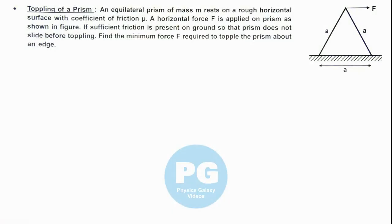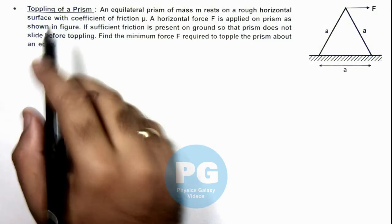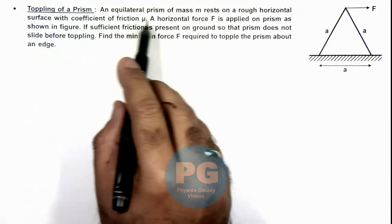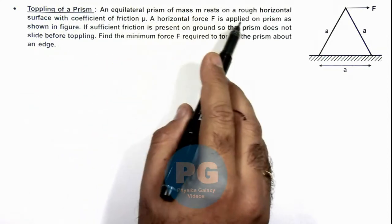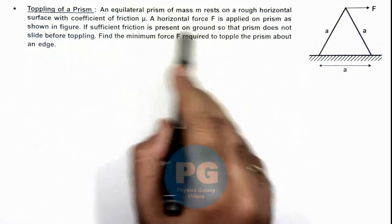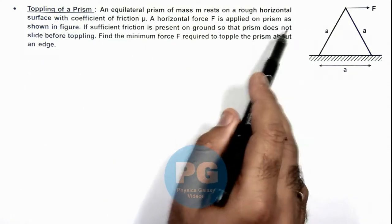In this illustration, we'll discuss toppling of a prism. Here we are given that an equilateral prism of mass m rests on a rough horizontal surface with coefficient of friction μ. A horizontal force F is applied on the prism as shown in the figure.